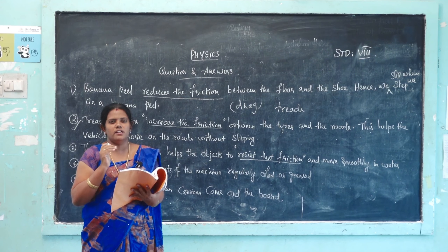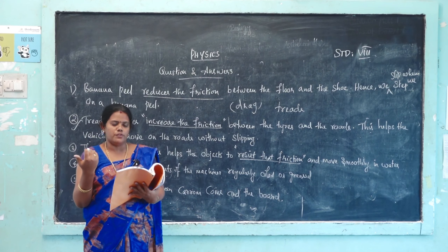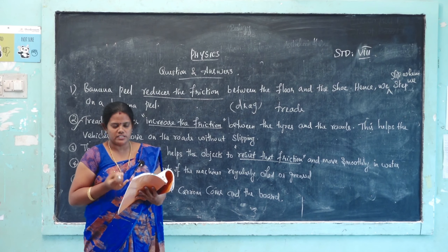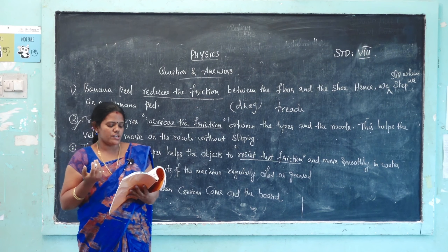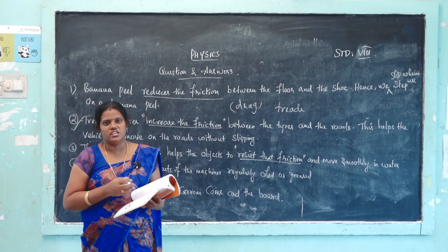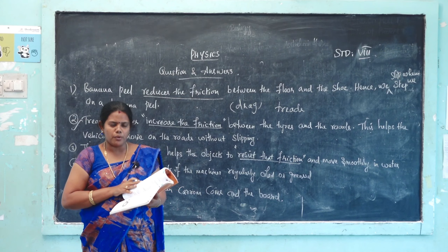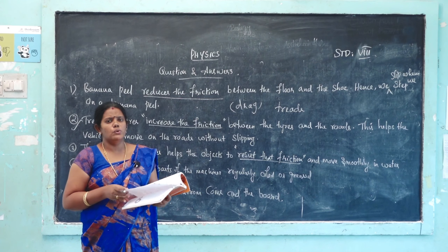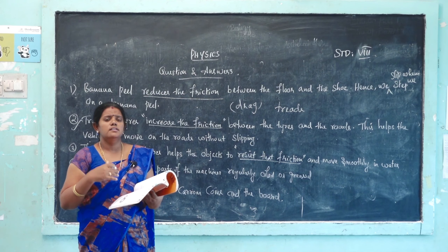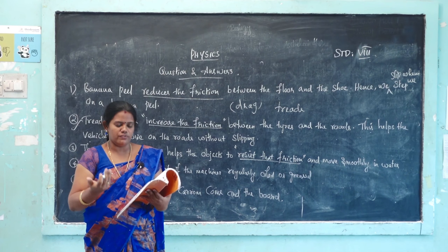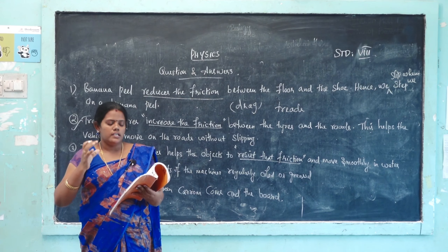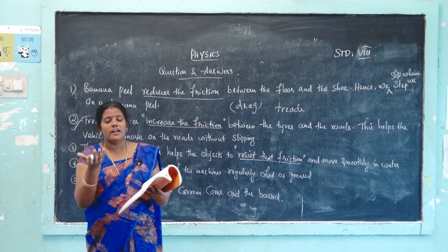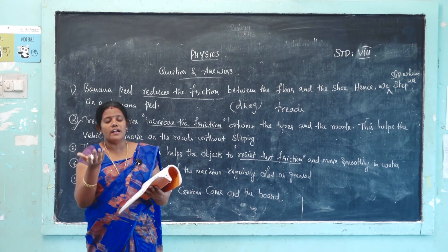Next question: define friction and explain the different types. Friction is the force that gives an opposite reaction to the relative motion between two objects. The types are static friction, sliding friction, and rolling friction. To reduce friction, we apply powder on a carom board, use oil and lubricants on machines, and use ball bearings.